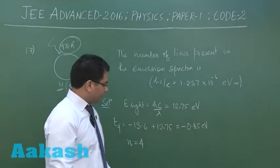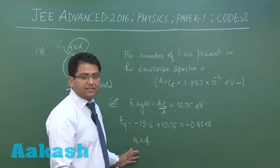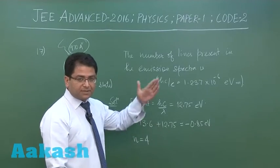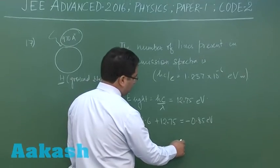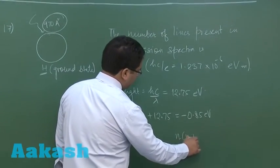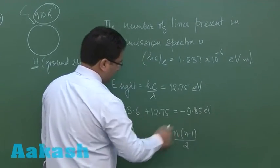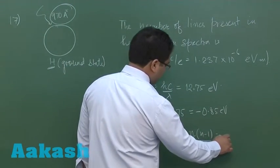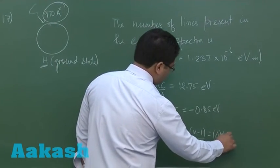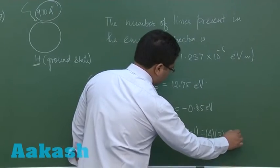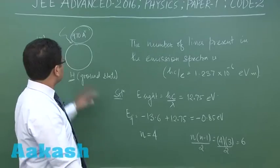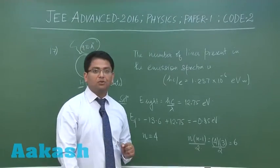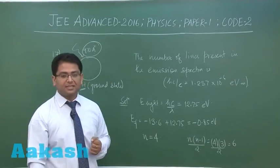And now let's see. If n is equal to 4, that's a final state. Now when it comes back to the ground state, you know the total number of radiation is n times n minus 1 by 2, and that particular thing comes out to be 4 into 3 divided by 2, so that's 6. So 6 would be the correct option. That is question number 17. Now we'll move to the final question, question number 18.